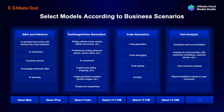Let me introduce the main features of Alibaba Cloud Model Studio. First, our platform service: Model Studio provides model selection, model experience, and model reasoning service around large language models. We can choose different size models according to business scenario at Model Square. All models have API SDK call examples, so developers and customers can easily complete model calls. If we want to experience and compare the effects of different models, we can select multiple models or change the config, then send a message and compare models in real-time through the model playground.